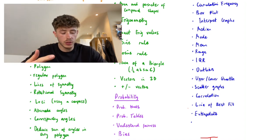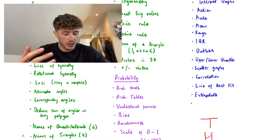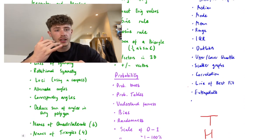Scattergraphs and the correlations that come with them - positive, negative, and none. Line of best fit and extrapolating data.